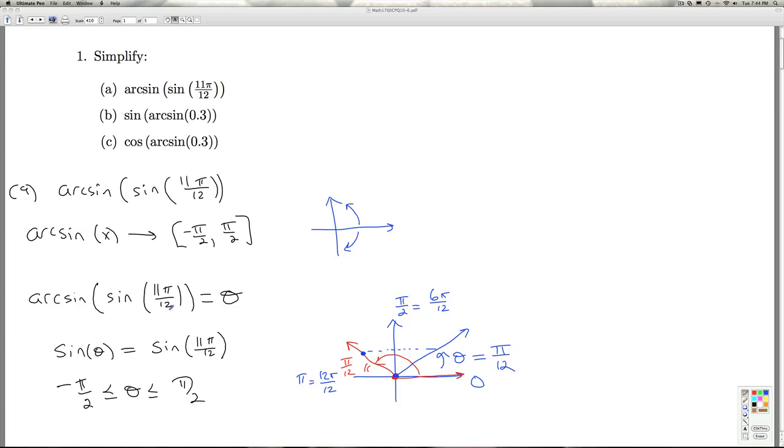So, what's the arcsine of the sine of 11π over 12? Well, that's some angle theta, whose sine is the same as the sine of 11π over 12, but the angle theta has to live between minus π over 2 and π over 2. That angle theta is none other than π over 12. So, the answer to part A is π over 12.